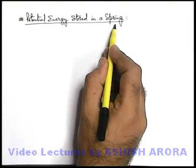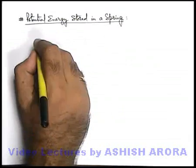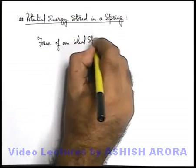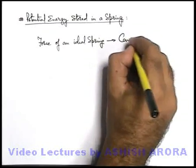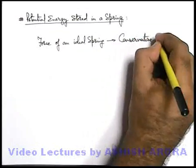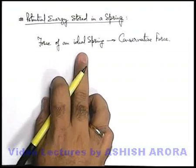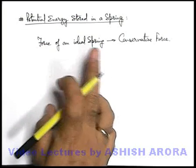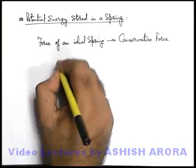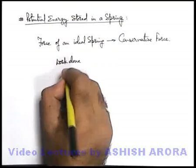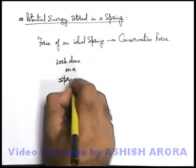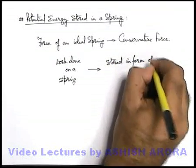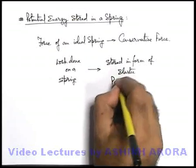Now we'll discuss potential energy stored in a spring. One thing you should always keep in mind: the force of an ideal spring is a conservative force in nature. That means whenever some work is done on a spring, or whenever a spring is deformed, we can simply state whatever work is done, it is stored in the form of elastic potential energy.